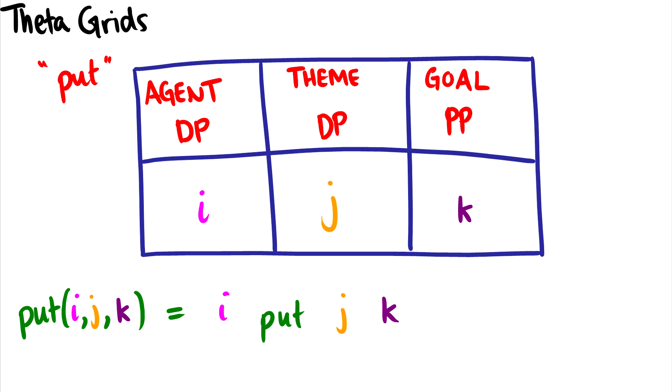Here's the theta grid for the verb put. This says, if we take a look at the bottom, there's three arguments for put, and it takes the form, I put j k, or I put something somewhere. And in this theta grid, it takes a look at the requirements. So for example, i has to be the agent, and it takes a DP. So I could say something like, Jeff put.